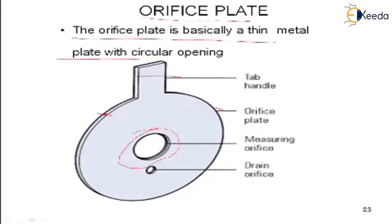This is the drain — if any slurry or anything is present, it will come out from this particular drain orifice. The orifice plate is the most widely used flow metering element because of its simplicity and low cost. It is a metal plate usually having a circular opening.